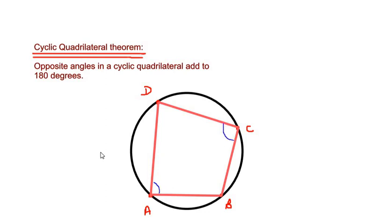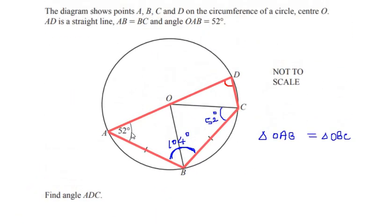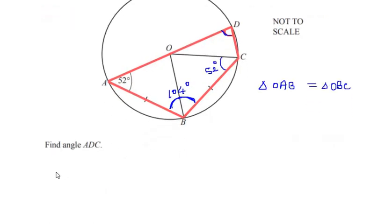The theorem states that opposite angles in a cyclic quadrilateral add to 180 degrees. Angles A and C are opposite, so angle A plus angle C equals 180 degrees. The same applies to angles B and D, which are also opposite angles, so angle B plus angle D equals 180 degrees.